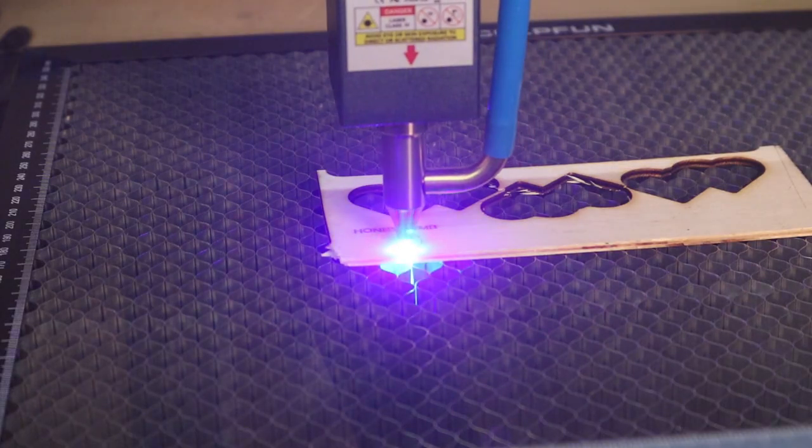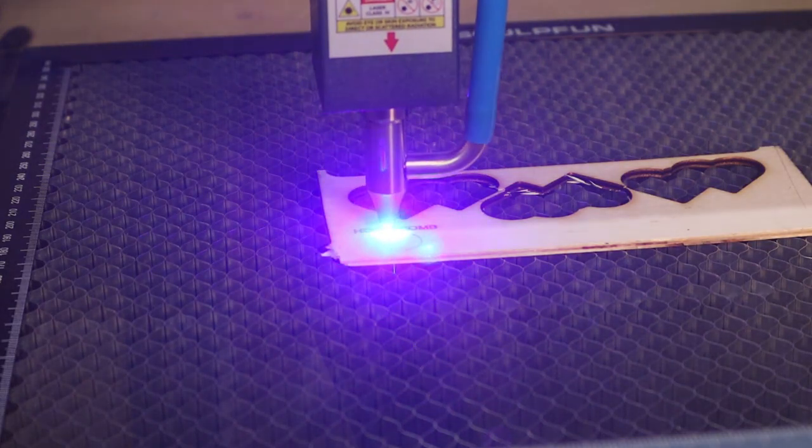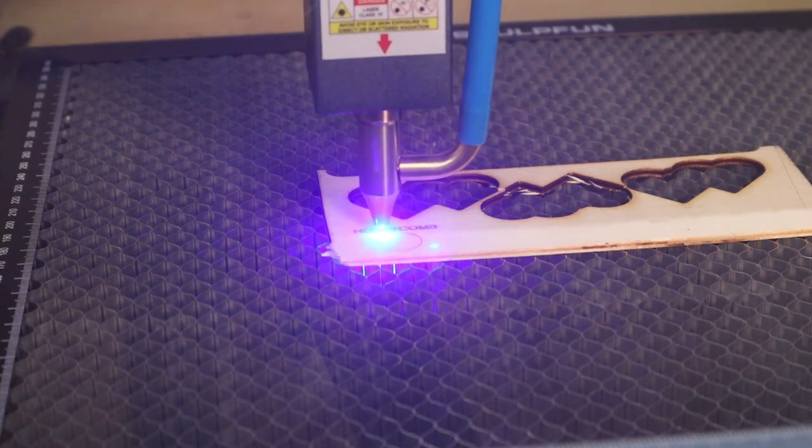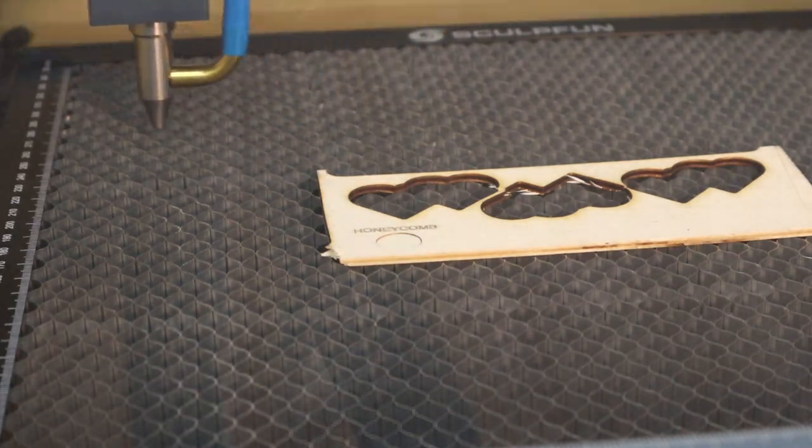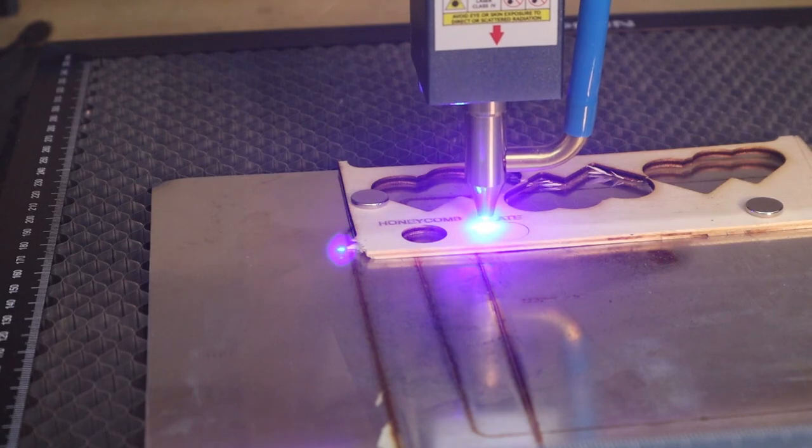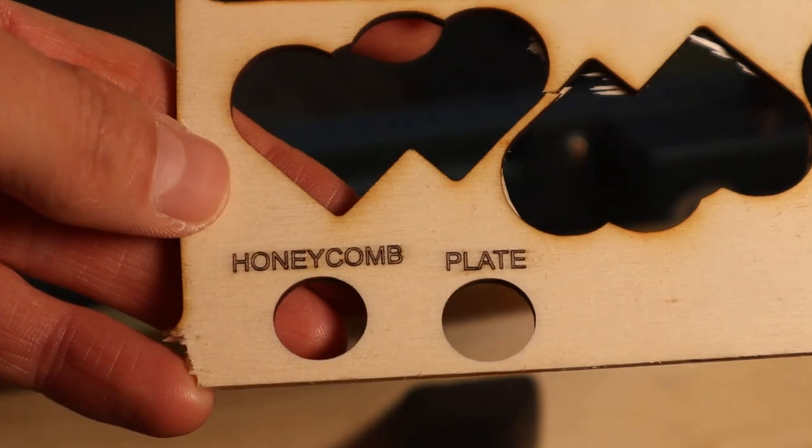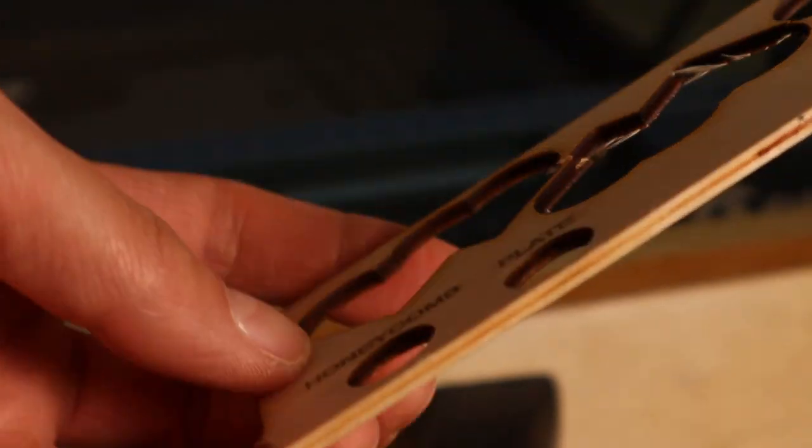The third benefit of the honeycomb is a cleaner backside when laser cutting, which I will now demonstrate. First, I cut out a circle using a honeycomb as a work surface and the second time I used a steel plate as a base. The plate does not allow smoke to escape and it produces a dirty rear side of the engraving.